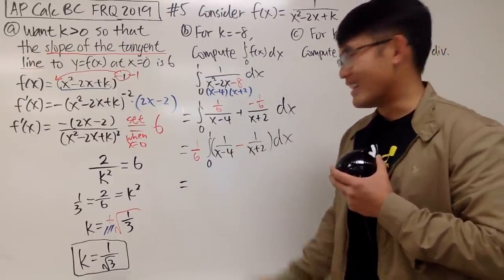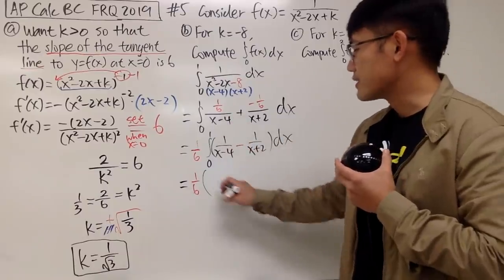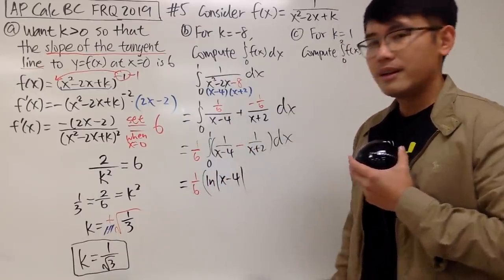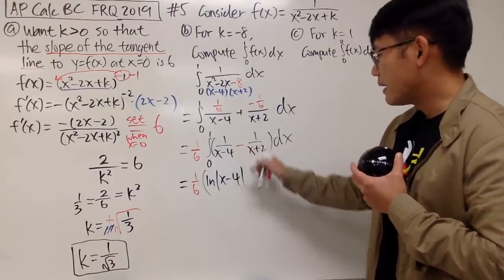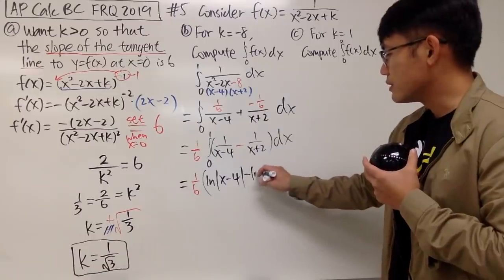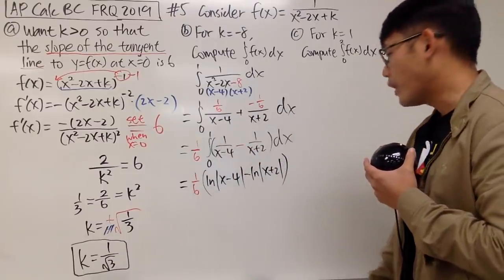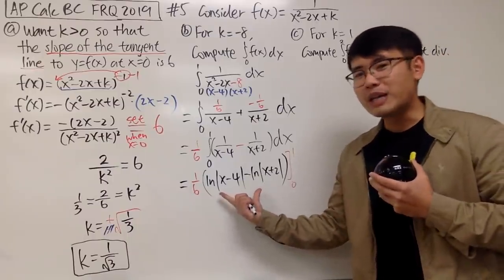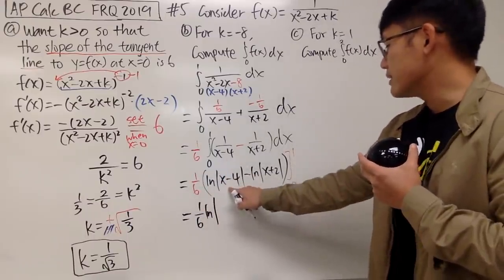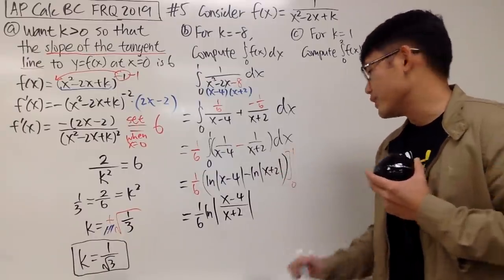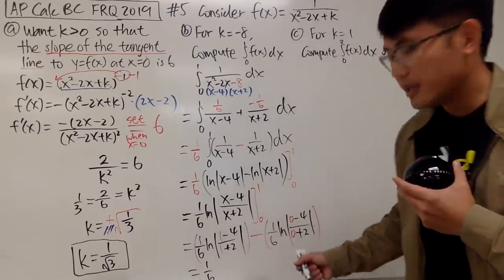Let's go ahead and integrate. We have the 1/6 out front. Integrating 1 over (x minus 4) gives natural log absolute value of (x minus 4), and the derivative of (x minus 4) is just 1, so divided by 1 doesn't change anything. Then minus: integrating 1 over (x plus 2) gives natural log absolute value of (x plus 2). We can actually combine these two logarithms: we have (1/6) times natural log absolute value of (x minus 4) over (x plus 2), evaluated from 0 to 1.